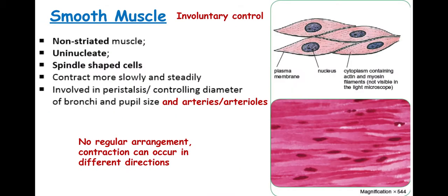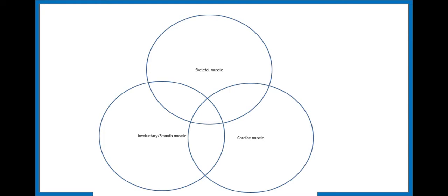The last type is smooth muscle, which is under involuntary control — for example, the smooth muscle lining the trachea contracts without conscious thought. As you can see in the image, it is non-striated and uninucleate, with one nucleus per cell. The cells have a spindle shape. Smooth muscle is involved in peristalsis, controlling the diameter of the bronchi and trachea, pupil size, and the diameter of arteries and arterioles, with no regular arrangement.